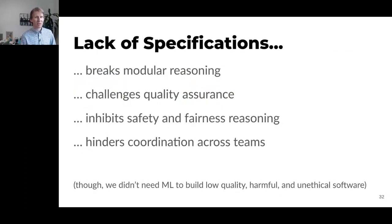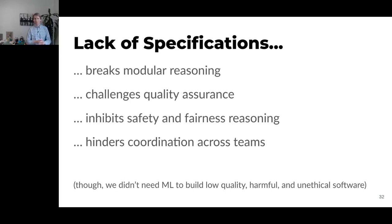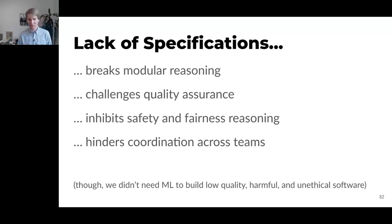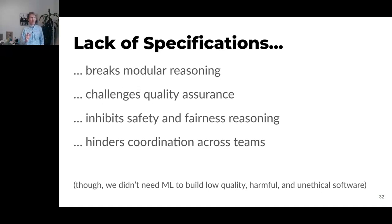This lack of specification and having unreliable functions has all kinds of downstream consequences. It breaks modular reasoning — we can't easily divide and conquer because we don't have clear interfaces. Information hiding doesn't work the same way. It challenges quality assurance because unit testing is way less powerful and we need to test more at the system level. How do you reason about safety when part of your system may make mistakes all the time? Machine learning makes it much harder to give any confidence in software systems.